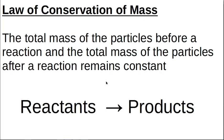The law of conservation of mass says the total mass of particles before a reaction and the total mass of the particles after a reaction remains constant. We like to use the word 'particles' because it covers atoms, molecules, ions — all of the different kinds of things that we can do with atoms to turn them into different chemical things. So when reactions go to products, mass here equals mass there.